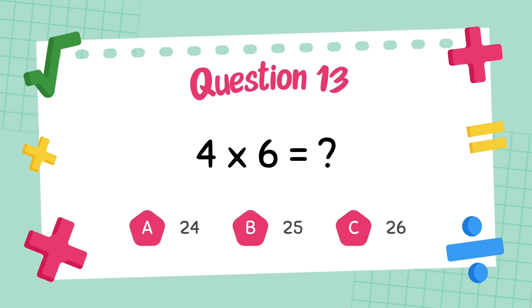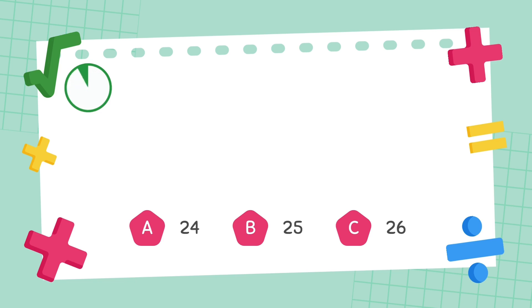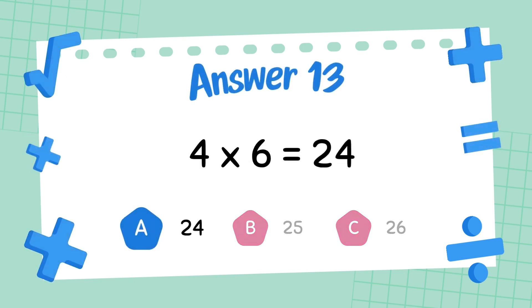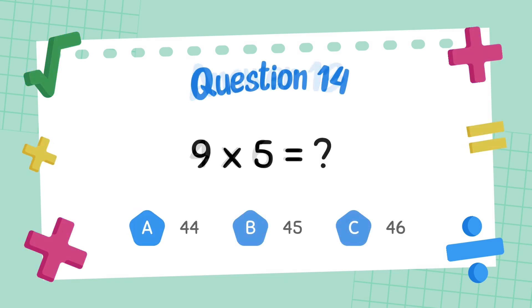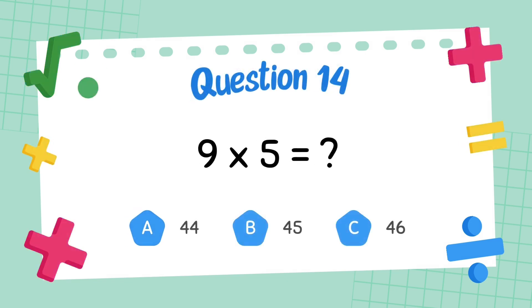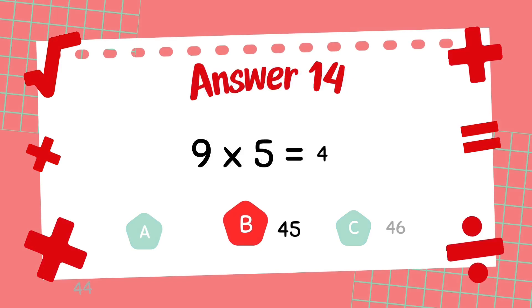What is 4 multiply 6? The answer is 24. What is 9 multiply 5? The answer is 24.